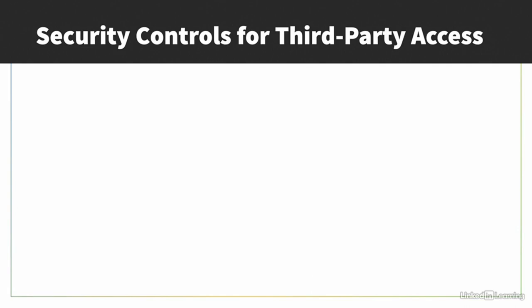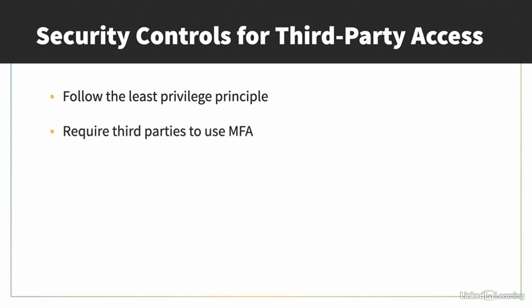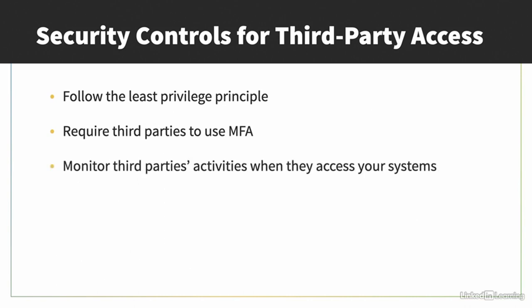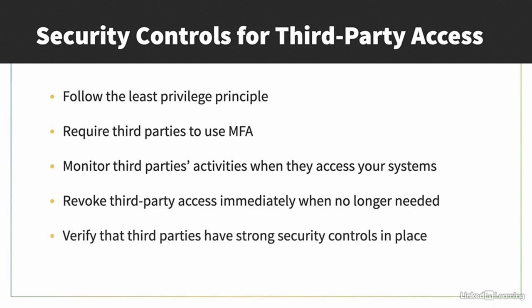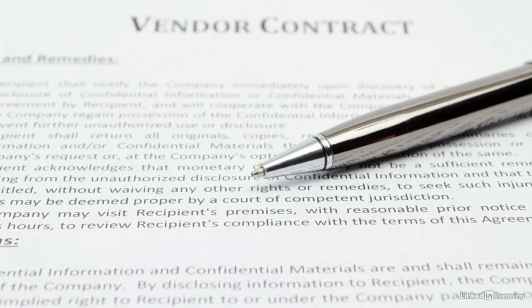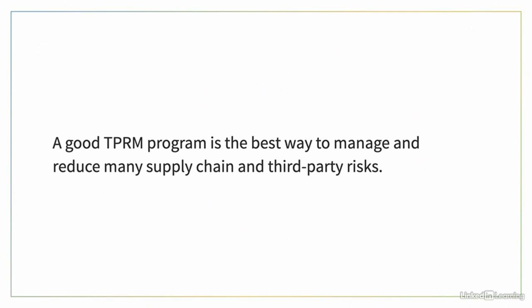Here are some security controls that can help protect against risks associated with third-party access: follow the least privileged principle to only grant third parties the access they need; require third parties to use multi-factor authentication or MFA when accessing your systems; monitor the activity of third parties with a SIEM or other monitoring solution; ensure any third-party access is revoked immediately when no longer needed; and take steps to verify that third parties have strong security controls in place, like reviewing their security certification documentation or requiring security questionnaires. Also work with your legal team to require strong security controls in your contracts with third parties. A good TPRM is the best way to manage and reduce many supply chain and third-party risks.